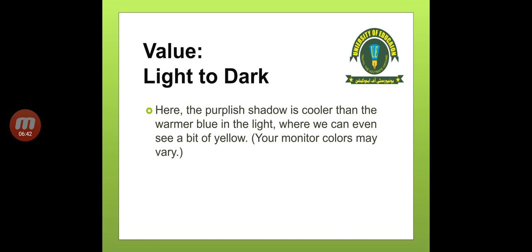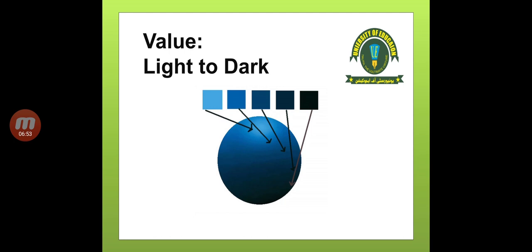Continuing about value — light to dark — here the purplish shadow is cooler than the warmer blue in the light, where we can even see a bit of yellow. You can see in this picture how lights and darks are shown. The value is such that the color is the same, but it has different values — moving from light to dark.